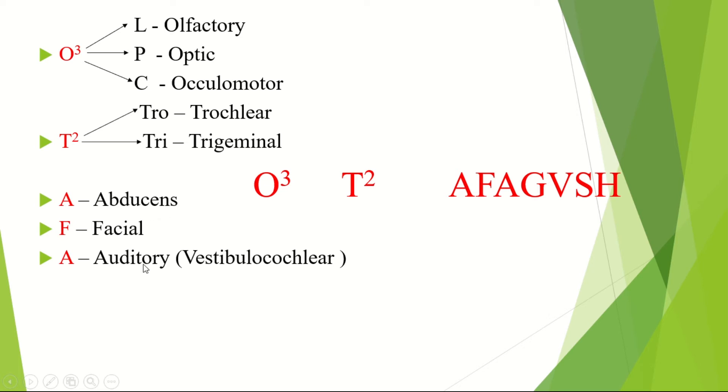G for glossopharyngeal, V for vagus cranial nerve 10, S for spinal accessory or simply accessory, and H for hypoglossal nerve. So this much is the mnemonic for the cranial nerves.